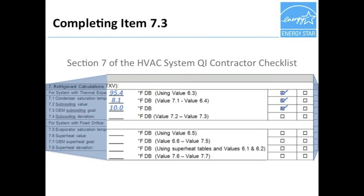Item 7.3 is used to document the manufacturer's subcooling goal — that is, the ideal subcooling temperature. Rob found this value in the manufacturer's installation manual: 10 degrees. Finally, item 7.4 is used to calculate and record the difference between the actual subcooling temperature and the target subcooling temperature. In this case, the difference is 1.9 degrees.